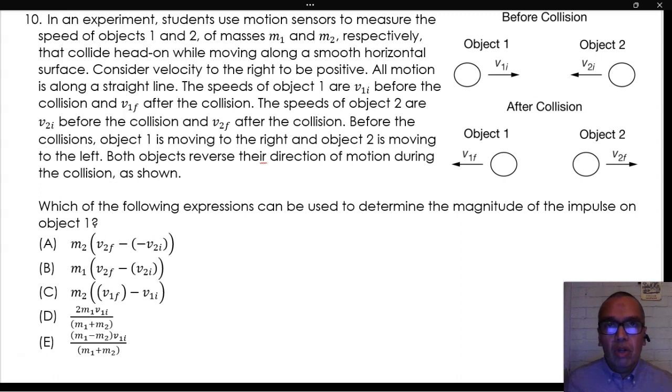Before the collision, object 1 is moving to the right and object 2 is moving to the left. Both objects reverse their direction of motion during the collision as shown. Which of the following expressions can be used to determine the magnitude of the impulse on object 1?